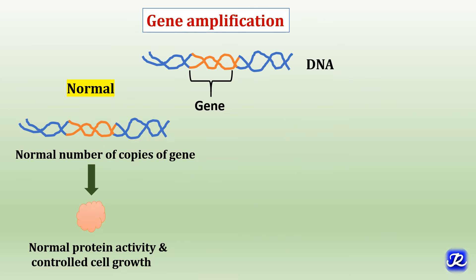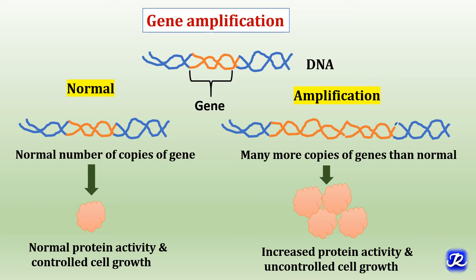The fourth mechanism is gene amplification. Normally, gene copies are transcribed and translated to form normal proteins with controlled cell growth. In amplification, many more copies of genes are formed than normal, ultimately resulting in increased protein activity and uncontrolled cell growth. This is how gene amplification plays a major role in activation of proto-oncogenes into oncogenes.